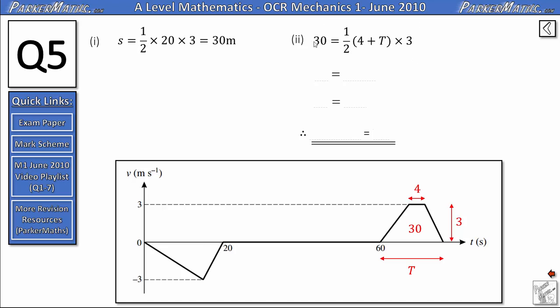that'll give us 60 on this side. We'll divide through by the 3, we get 20 on this side. On the right hand side, we're left with 4 plus T. So to get T, we just subtract 4 from both sides to get T equals 16 seconds.